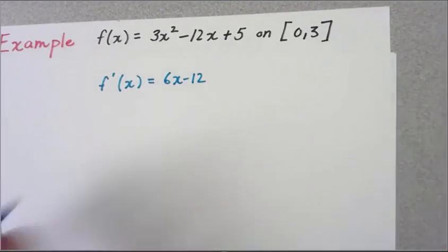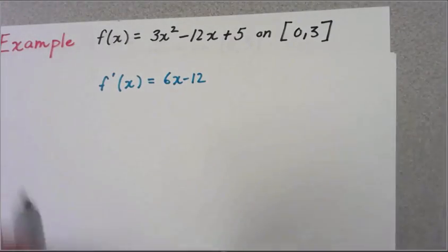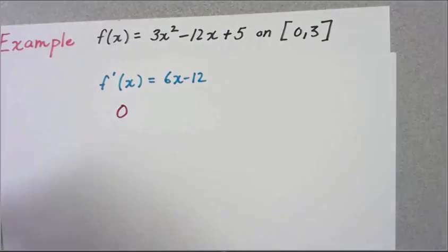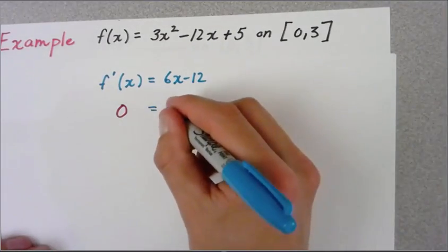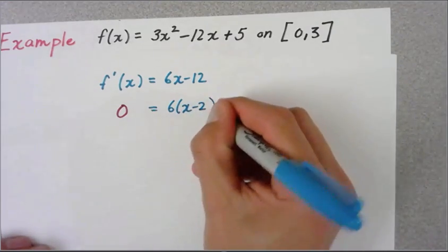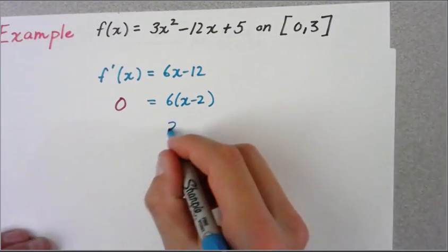From here we know that we want the critical numbers - we've got to find any turning points. So we're going to set our derivative equal to zero. We can factor out a 6 here and we get this. So our x is going to be equal to 2.